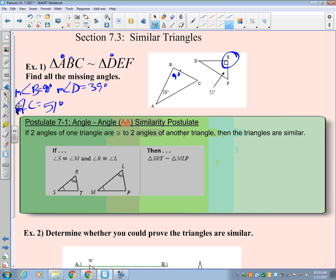51 degrees. So when you are a similar triangle, all your angles are congruent, and all your sides are proportional. That's just a review from last one. Angles congruent, sides proportional. That's the definition of similarity.